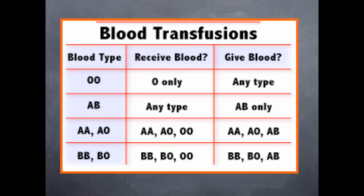Blood type A can get blood from A or O, and can give blood to A or AB. Blood type B can get blood from B or O, and can give blood to B and AB.